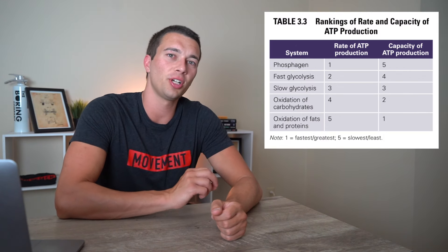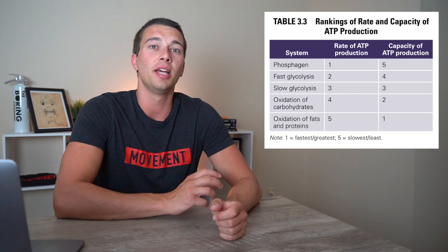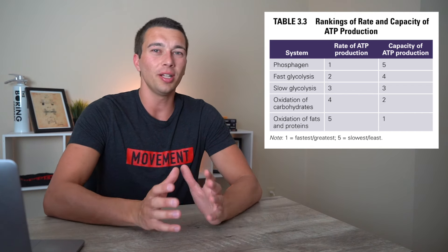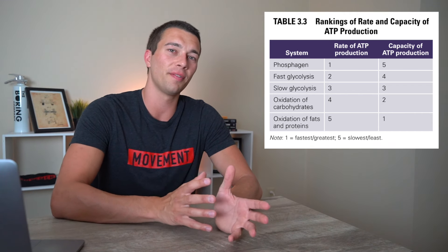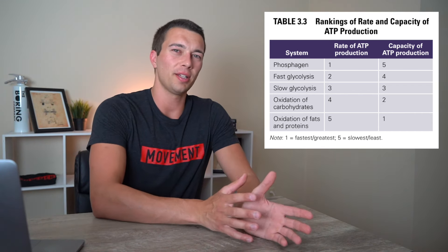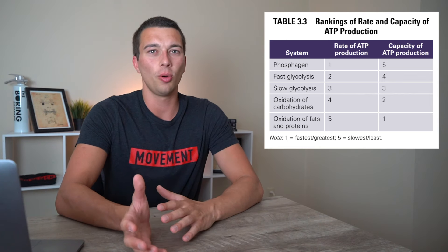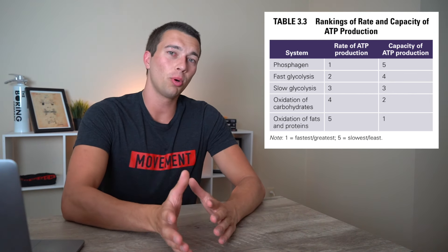We're going to start off by pulling this chart from page 54 of the Essentials of Strength Training and Conditioning book. This chart is going to show us relatively which energy system is going to be providing the most energy during short bouts of high intensity effort versus during long bouts of low intensity efforts.